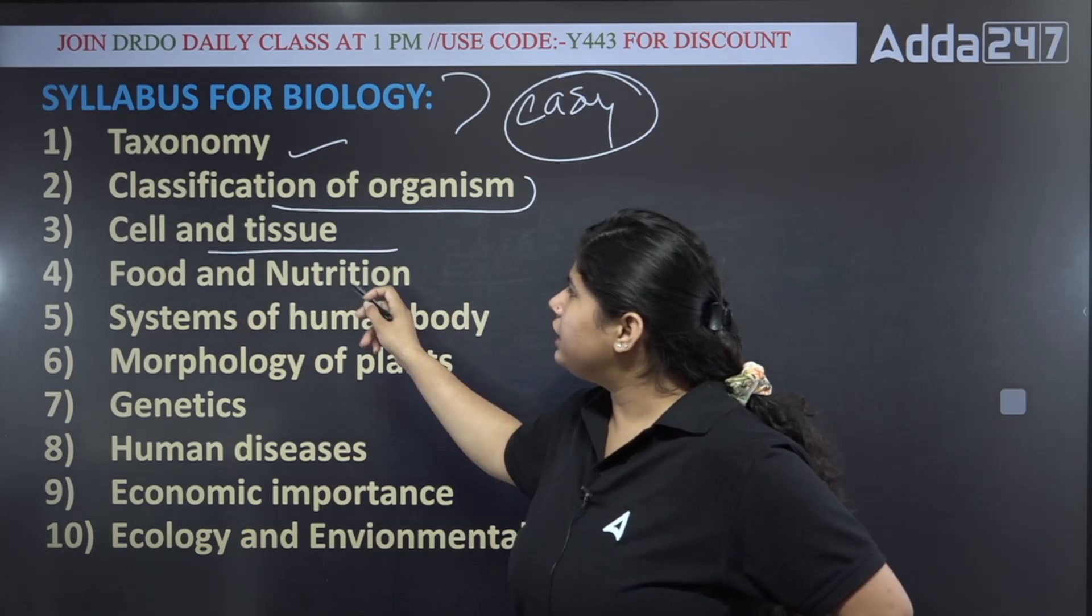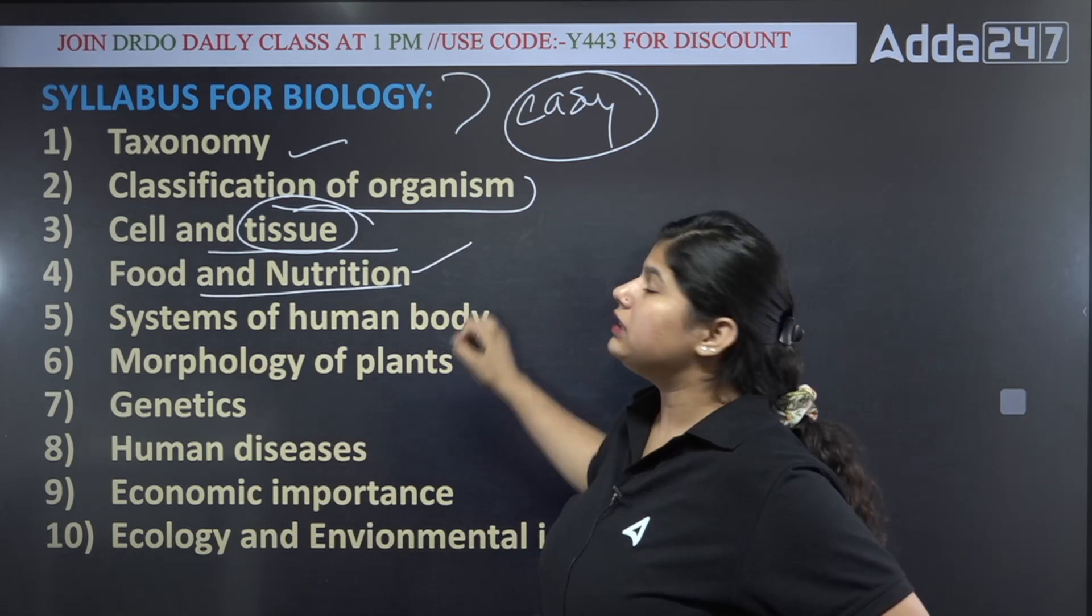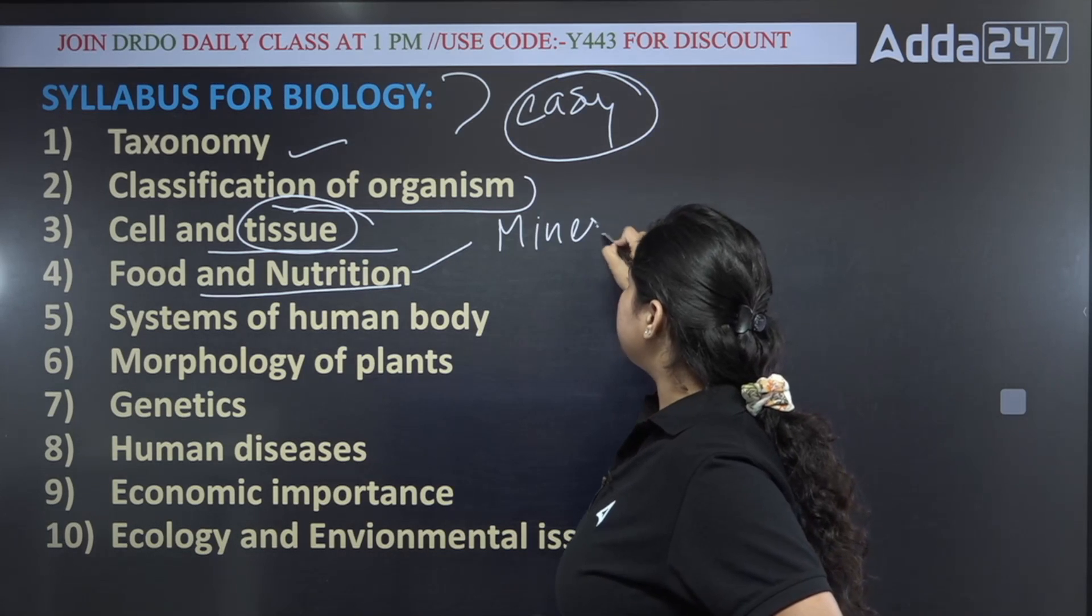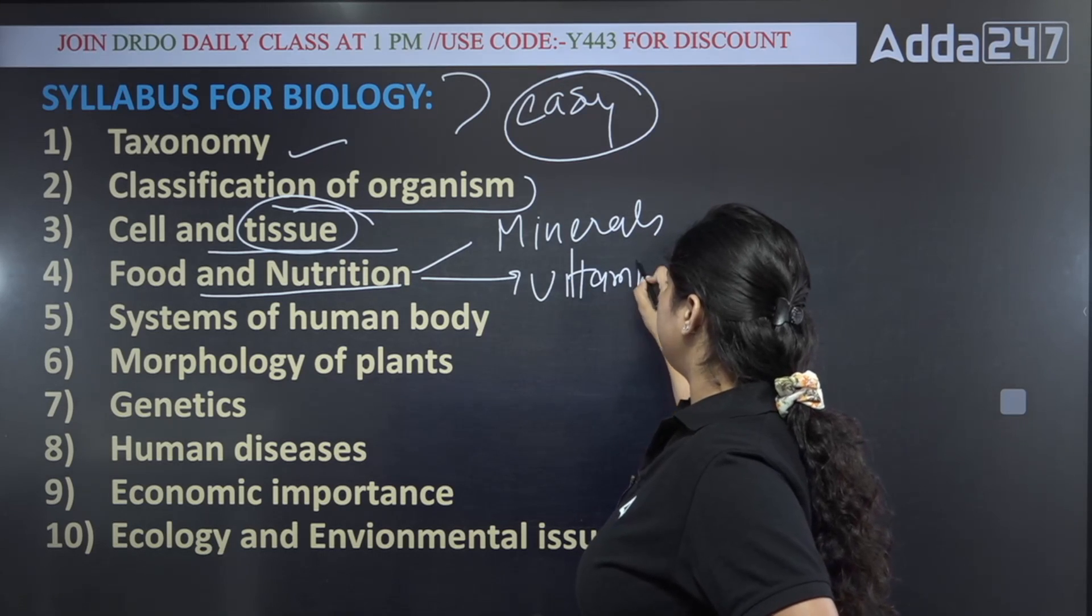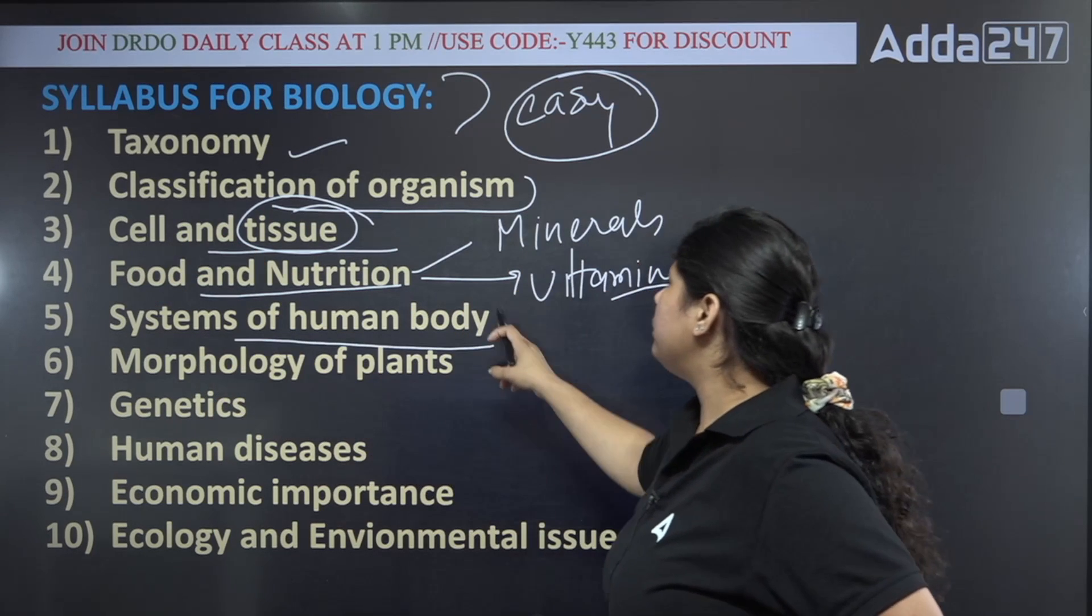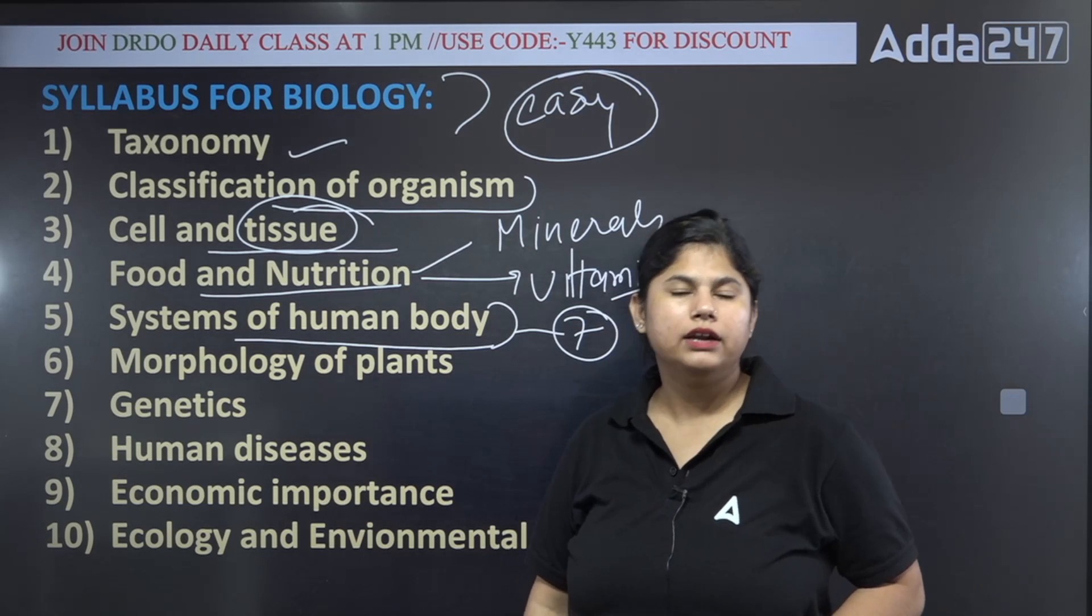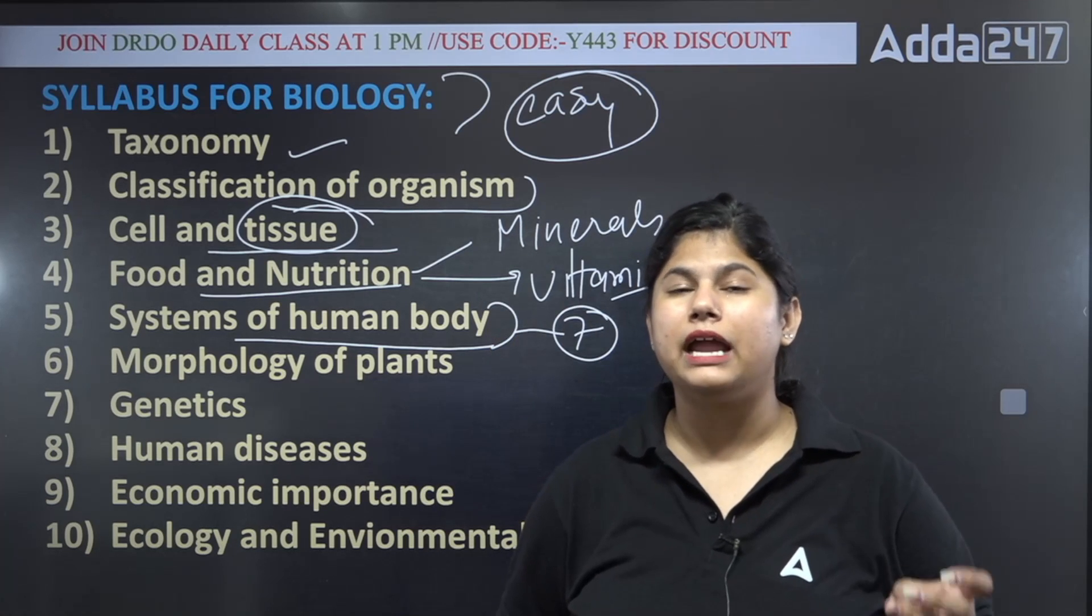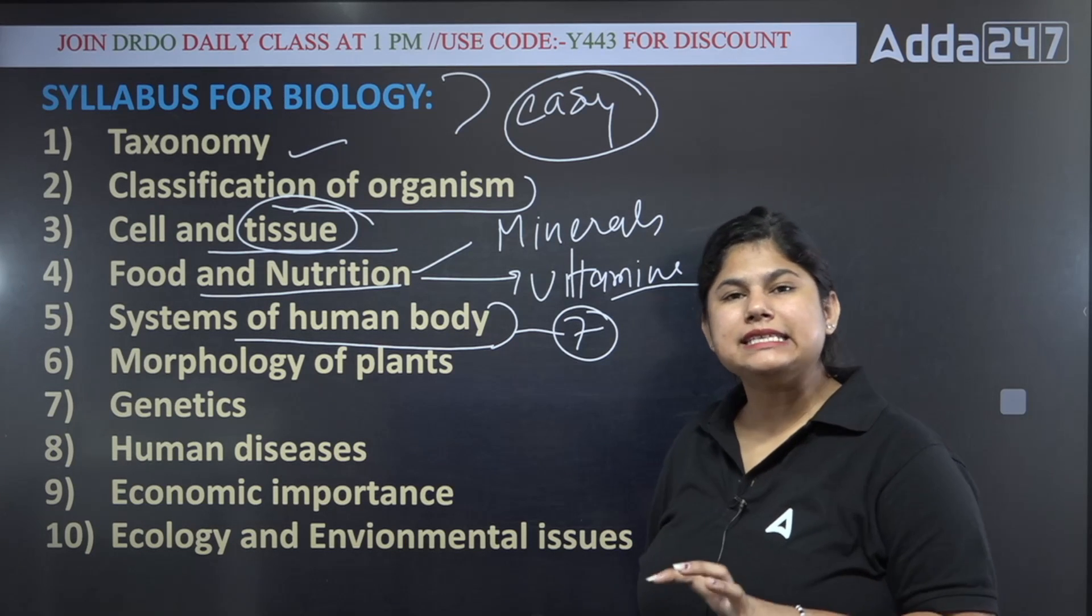Cells and tissue—plant and animal. Food and nutrition: minerals, vitamins. What you learn—vitamins, carbohydrates, proteins, everything. Your system of human body: seven systems in the human body, like digestion, respiration, excretion, nervous, endocrine system, skeletal and muscular system. These seven systems are covered in the life processes chapter.